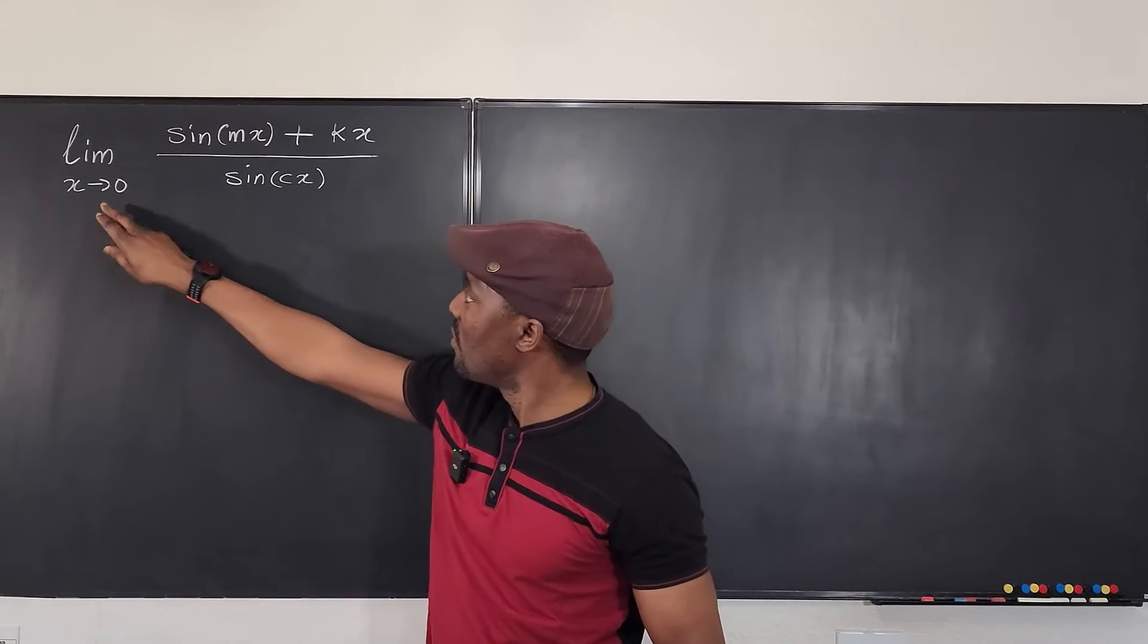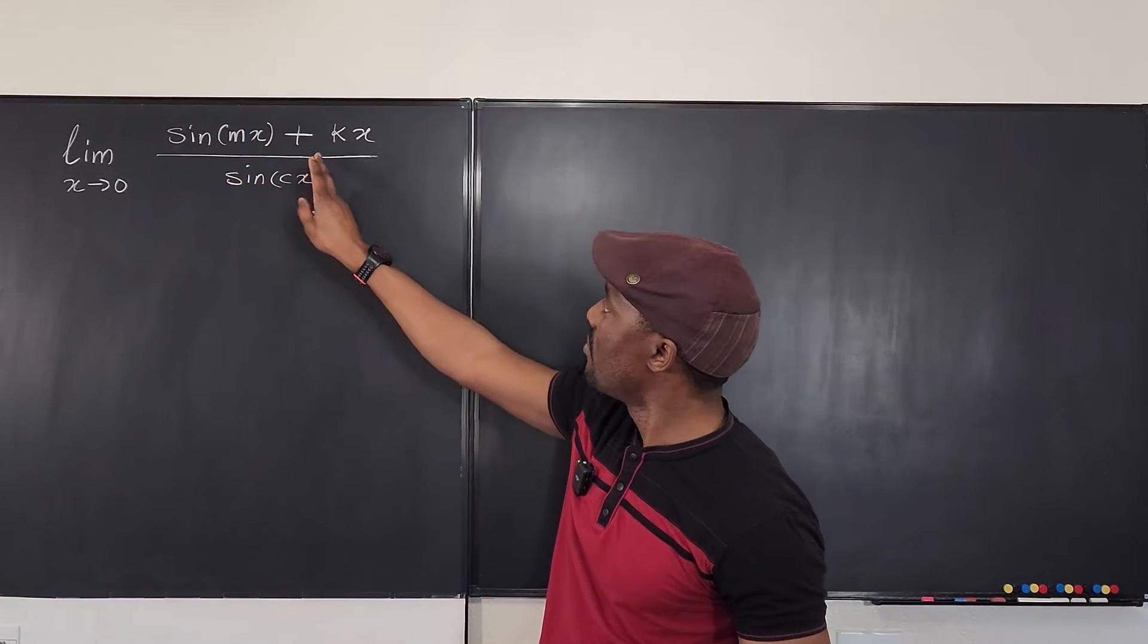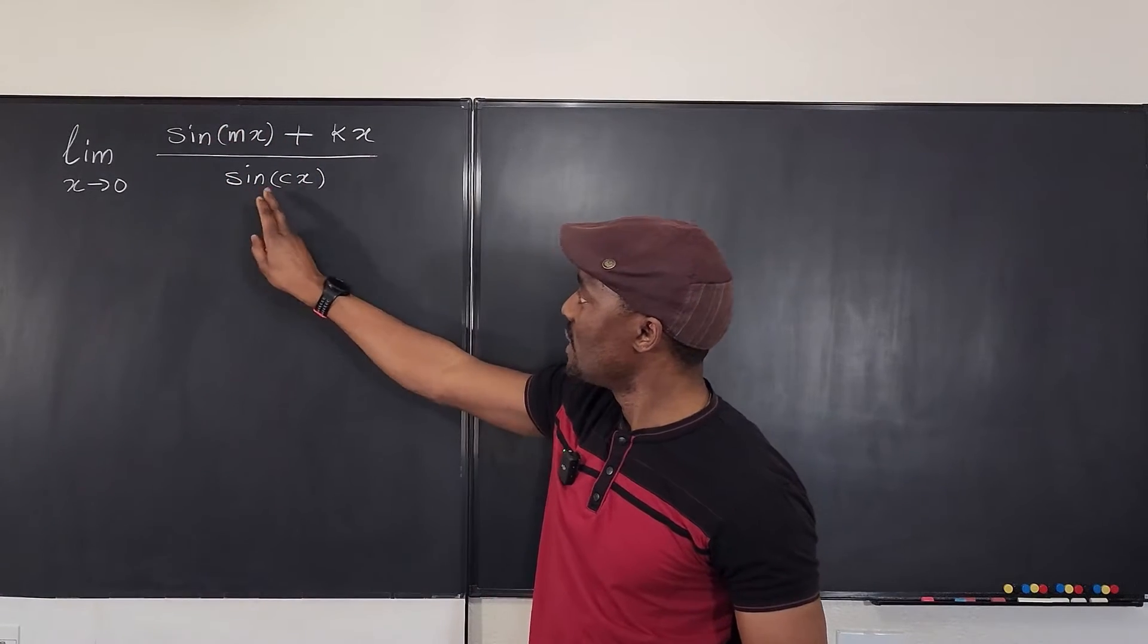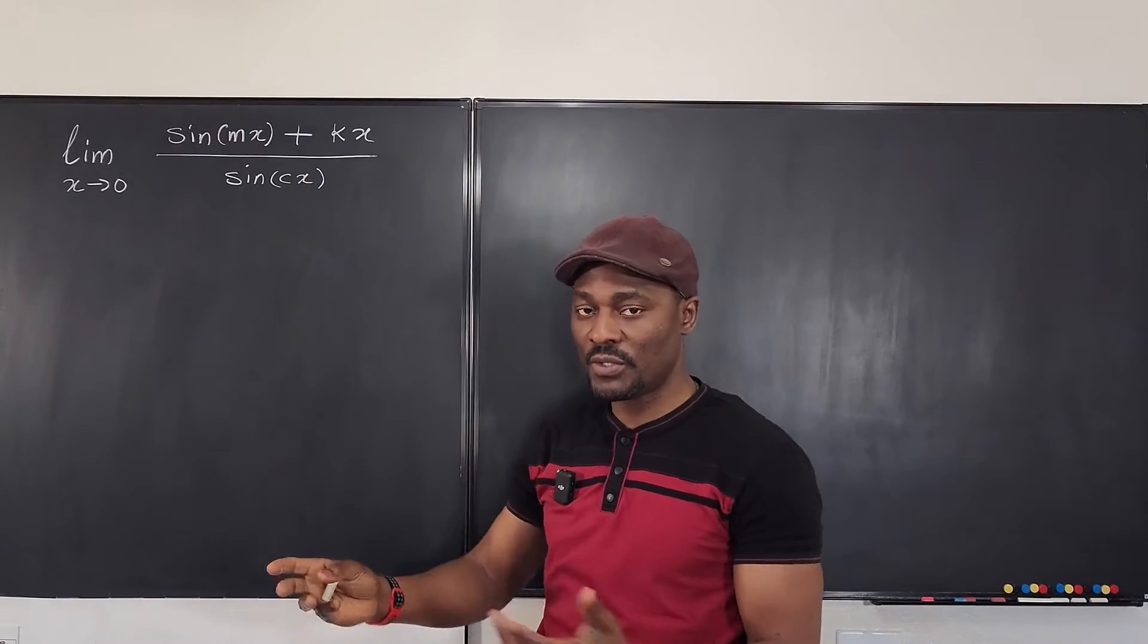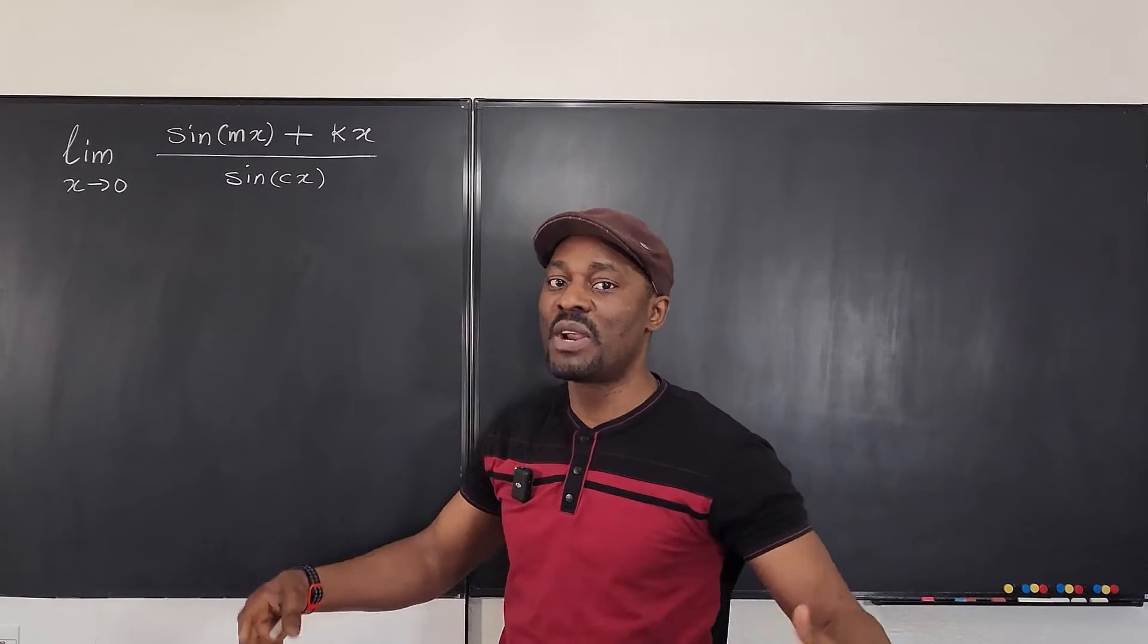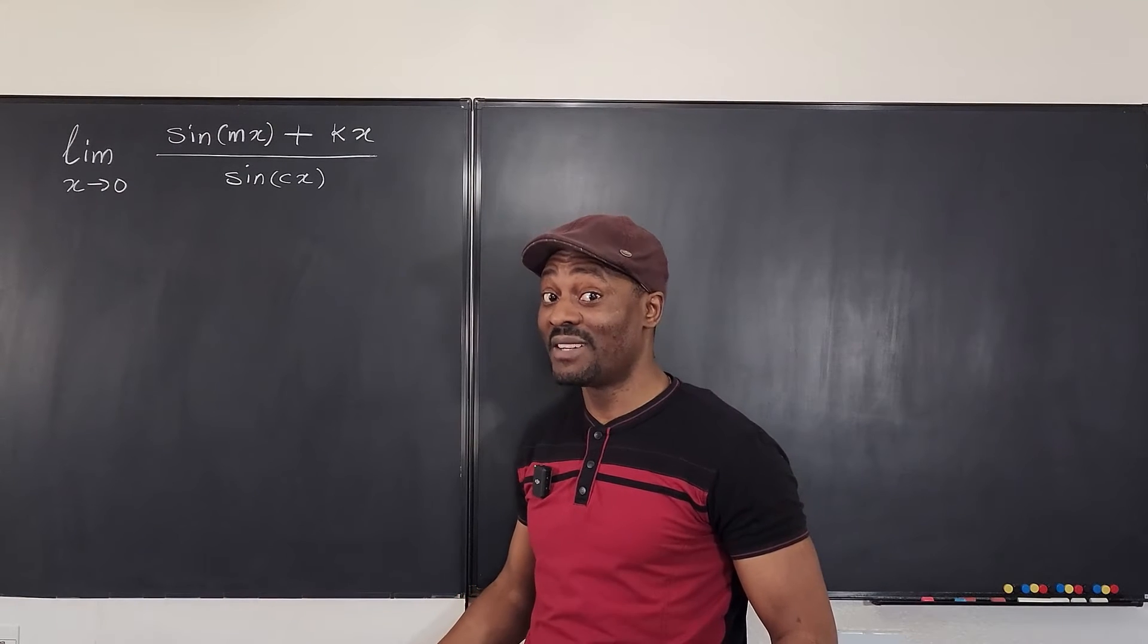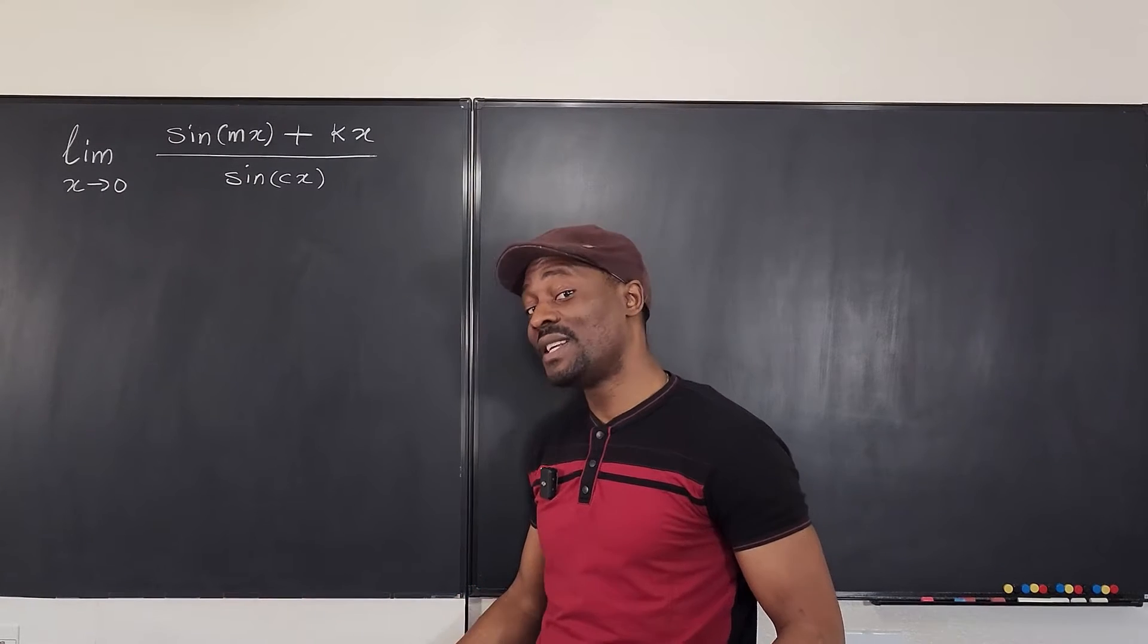Remember, if we plug in zero here, it's going to be m times zero. So you're going to have sine zero plus zero over sine zero, which gives you zero over zero. So this is a zero over zero situation, which guarantees that some algebraic manipulation will save the day. So what's the algebraic manipulation? Let's see it.